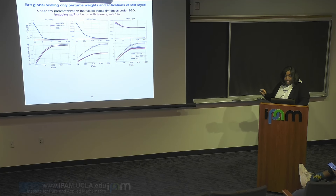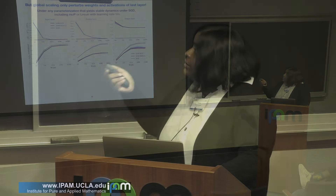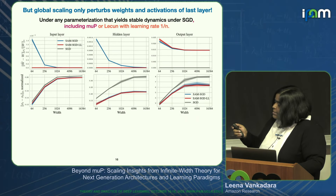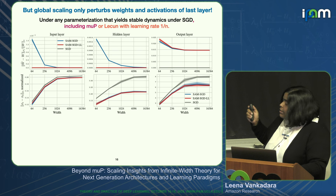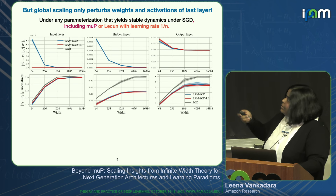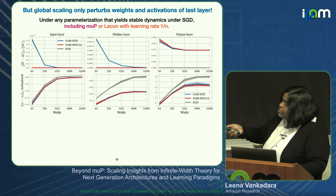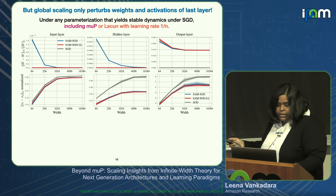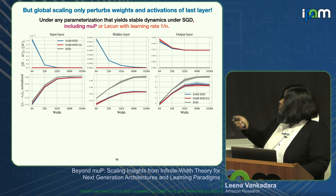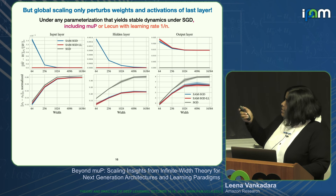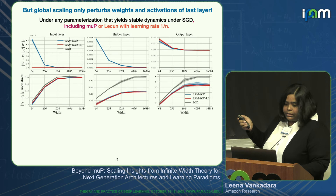This holds for any scaling rule giving stable SGD dynamics. The illustration shows appropriately normalized weight perturbations (top) and activation perturbations (bottom) for input, hidden, and output layers of a 3-4 layer network, training MLPs at different widths with three algorithms. Except in the last layer, as width grows, perturbations basically go to zero—so SAM is effectively only perturbing the last layer in the limit.